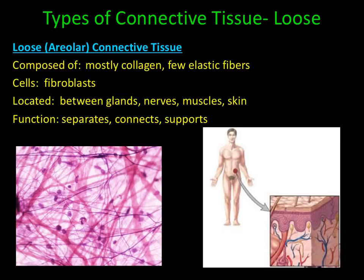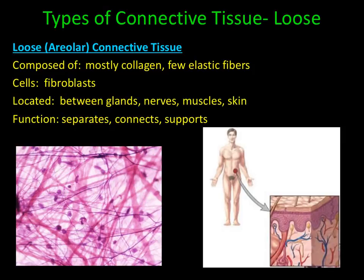Loose areolar connective tissue is so named because the fibers are spread far apart from one another. It is composed mostly of collagen fibers with very few elastic fibers. The type of cells found here would be fibroblasts, or fiber-making cells. It is located between glands, nerves, muscles, and skin. The primary function of loose areolar connective tissue is to separate, connect, and support other tissues.